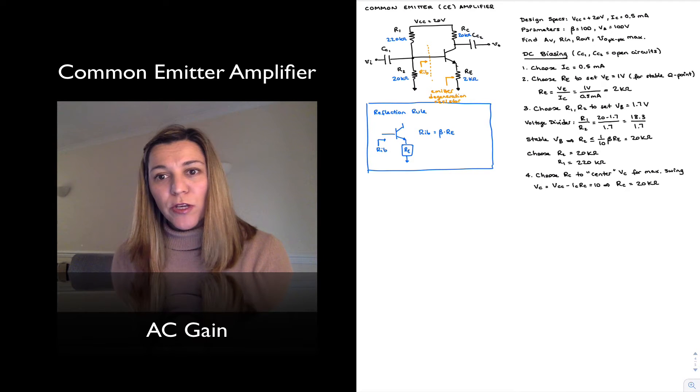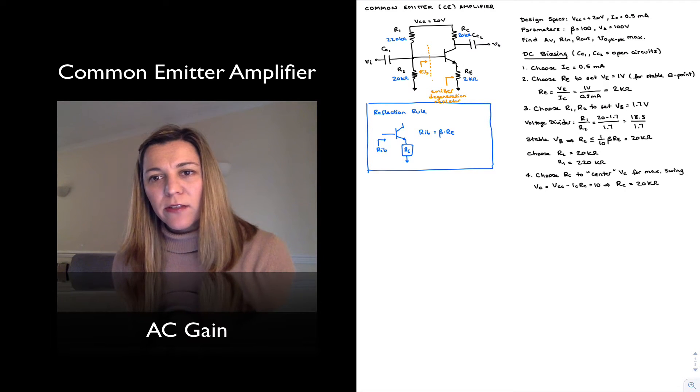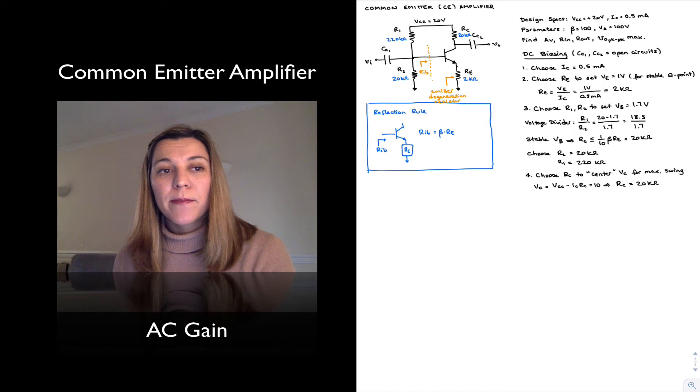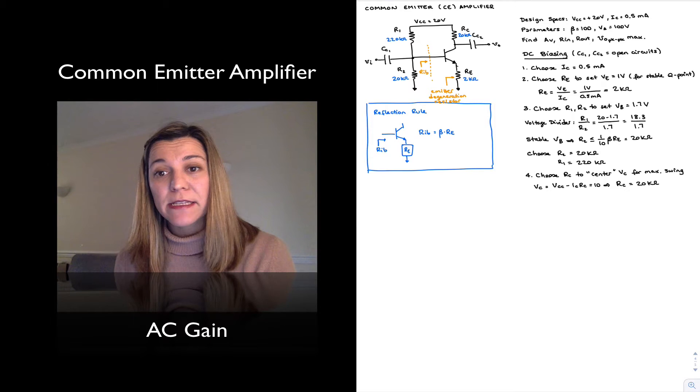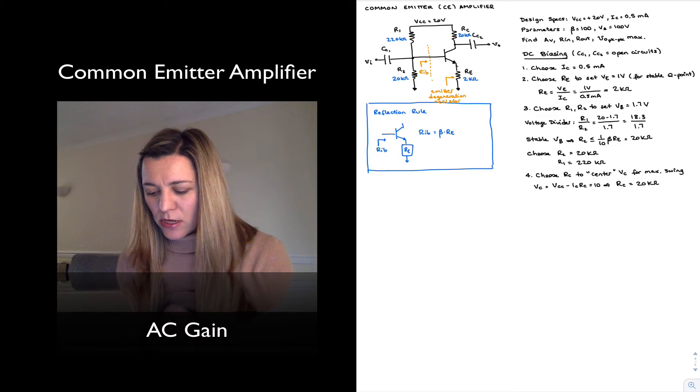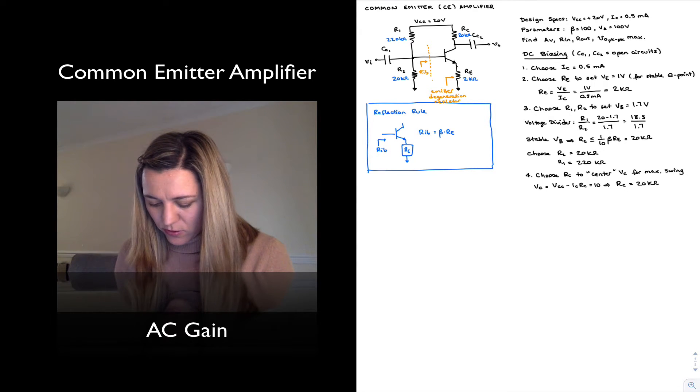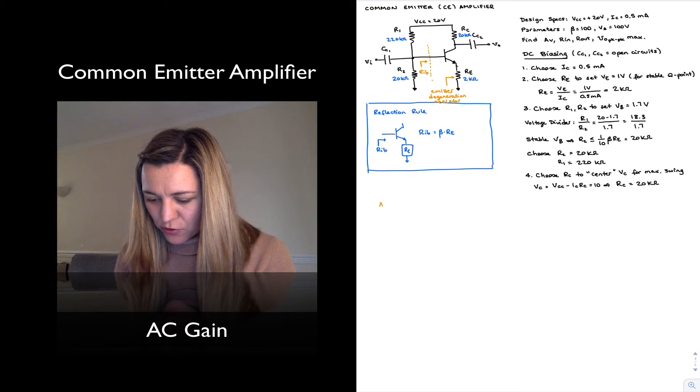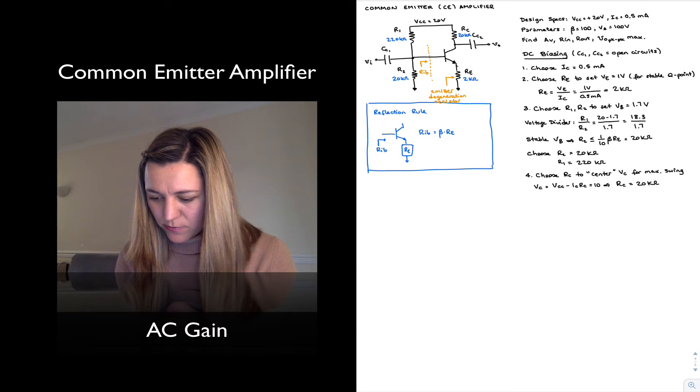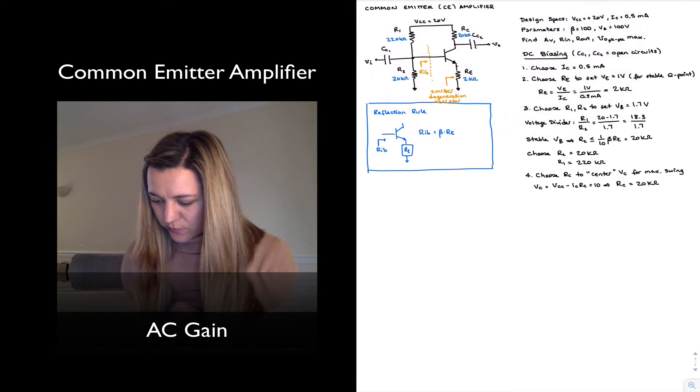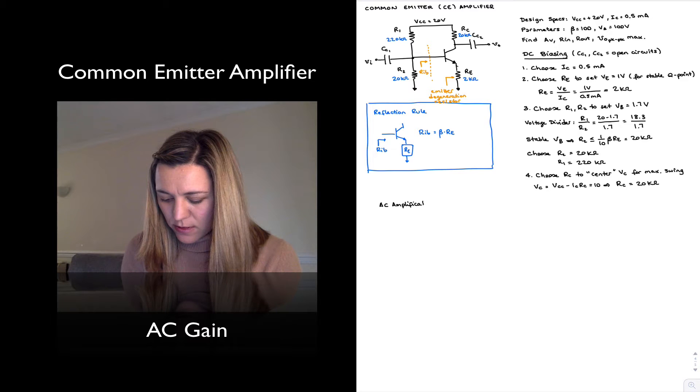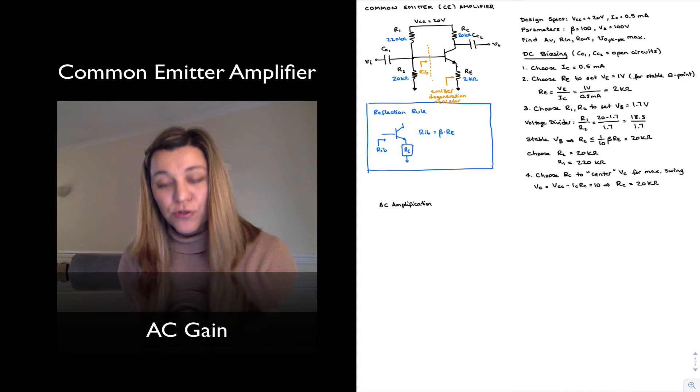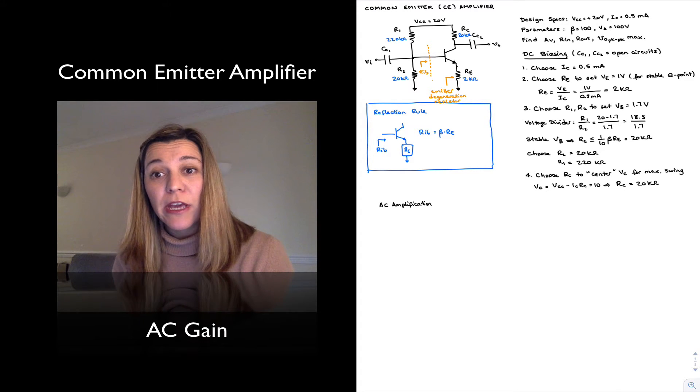Hello, let's continue looking at this common emitter amplifier circuit. We're going to look now at AC amplification of the circuit, or how the circuit amplifies small AC signals. For AC amplification purposes, we're going to assume that the coupling capacitors CC1 and CC2 behave as short circuits.